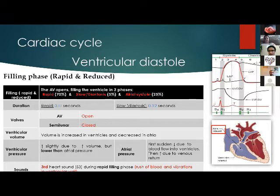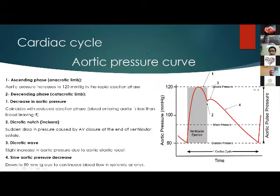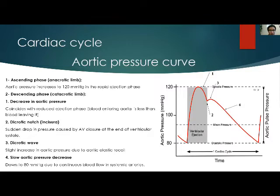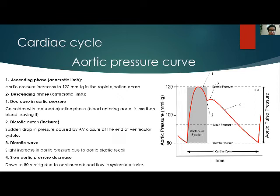The clinical significance of S3: in patients with mitral regurgitation and aortic regurgitation, S3 is increased. Regarding the aortic pressure curve, the ascending limb reaches 120 mmHg during the rapid ejection phase, followed by a decrease consistent with the reduced ejection phase. The dicrotic notch is a sudden drop in pressure caused by semilunar valve closure at the end of ventricular systole, followed by the dicrotic wave — a slight increase in aortic pressure due to aortic elastic recoil — then a slow decrease to 80 mmHg due to continuous blood flow into the systemic arteries.